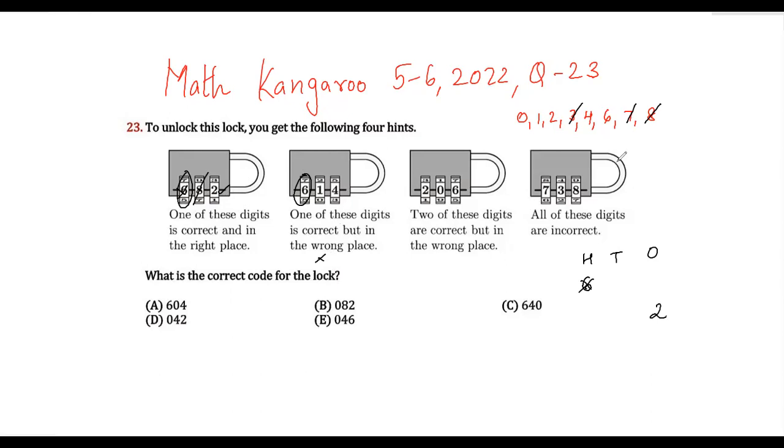Now these are all incorrect so this goes away. Now we come to this hint that we have 3. Two of these digits are correct but in the wrong place. So now what we have found is that 2 is correct but in the wrong place and the other digit will be a 0. So 0 has to come here or 0 has to come here because 6 is not the digit that we are looking for.